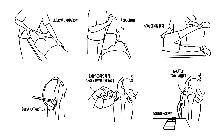In summary, trochanteric bursitis is inflammation of the greater trochanteric bursa, which lies over the greater trochanter of the femur. There are many causes, including chronic microtrauma, overuse injury, and regional muscle dysfunction. Treatment is usually conservative and includes rest, use of anti-inflammatory drugs, and stretching and strengthening the area.